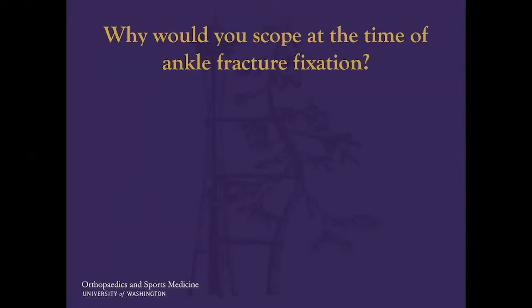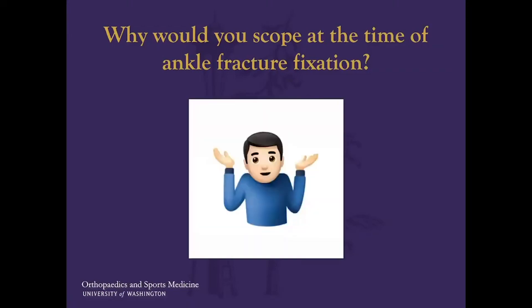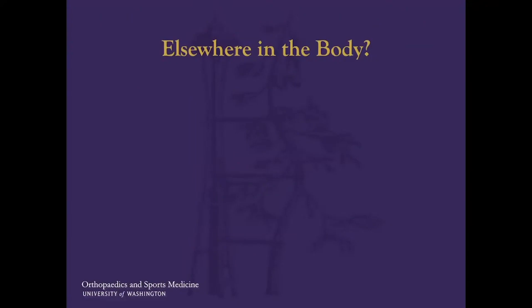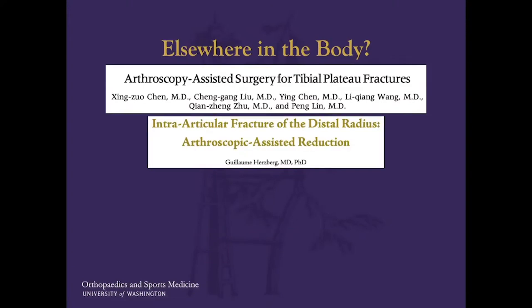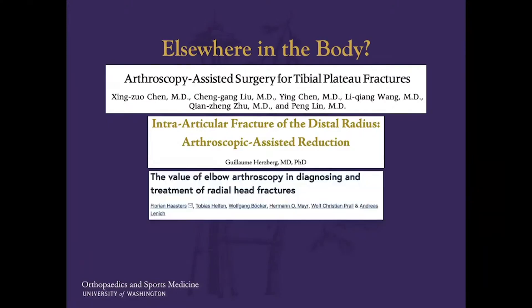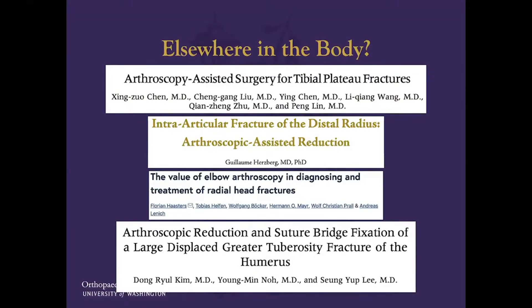So why would you scope at the time of ankle fracture fixation? Based on that prior study, it would help us identify a chondral injury so we can treat it or prognosticate patients. Arthroscopy has been used elsewhere in the body for fracture fixation and visualization — in the knee for tibial plateau fractures, in the wrist for distal radius fractures, in the elbow for diagnosing and treating radial head fractures, and in the shoulder for treating greater tuberosity and proximal humerus fractures.